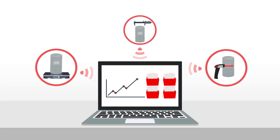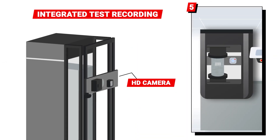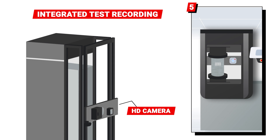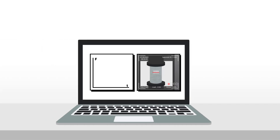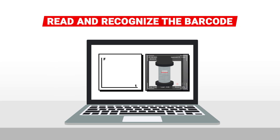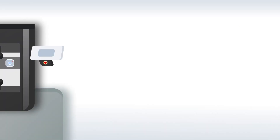As balances, calipers, and barcode readers are connected to your testing machine, all the data is automatically sent to the Controls Data Manager PC software, eliminating manual data entry and possible transposition errors. You can also get your compression machine fitted with an integrated high-resolution smart camera that will record the test and be able to read and recognize the barcode on the sample.